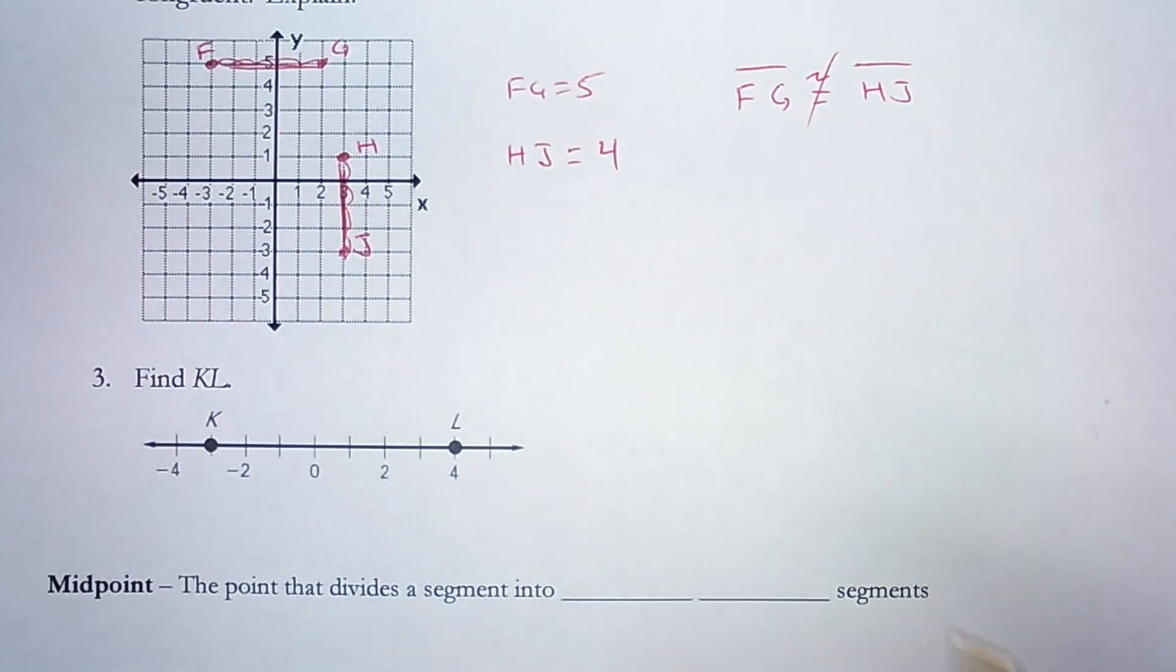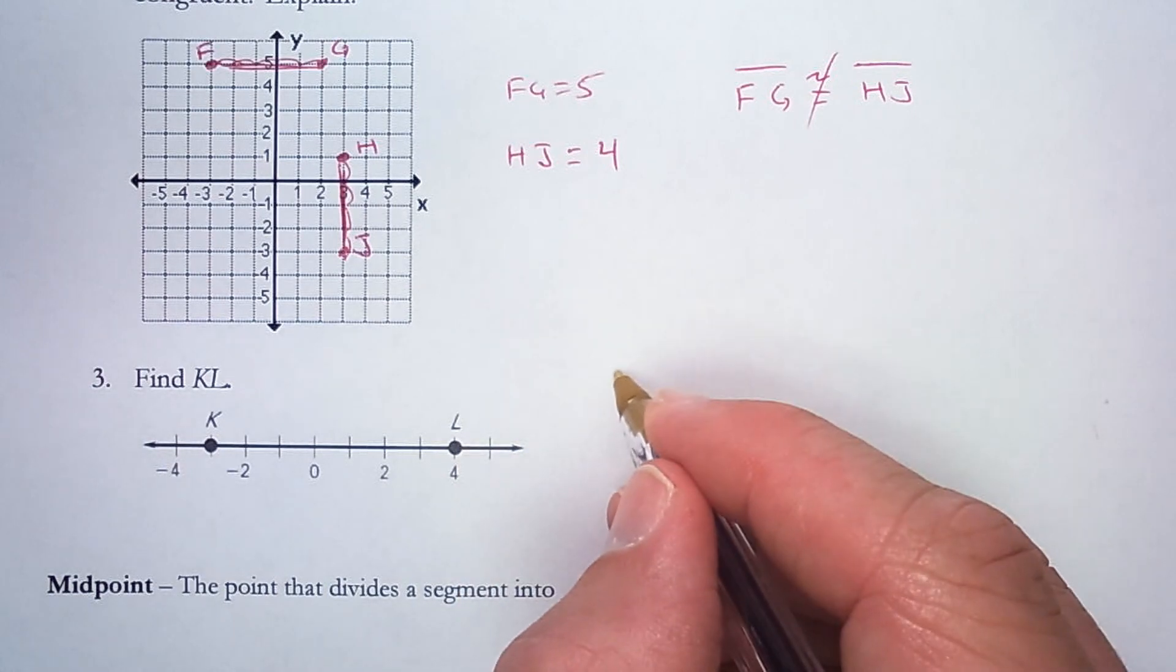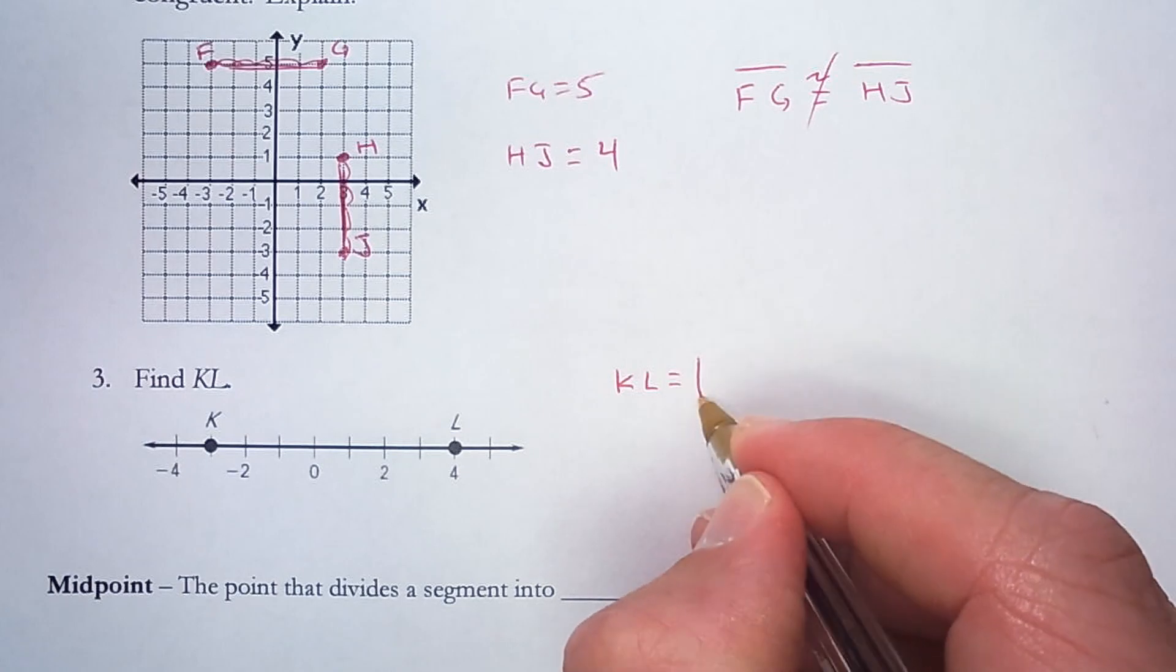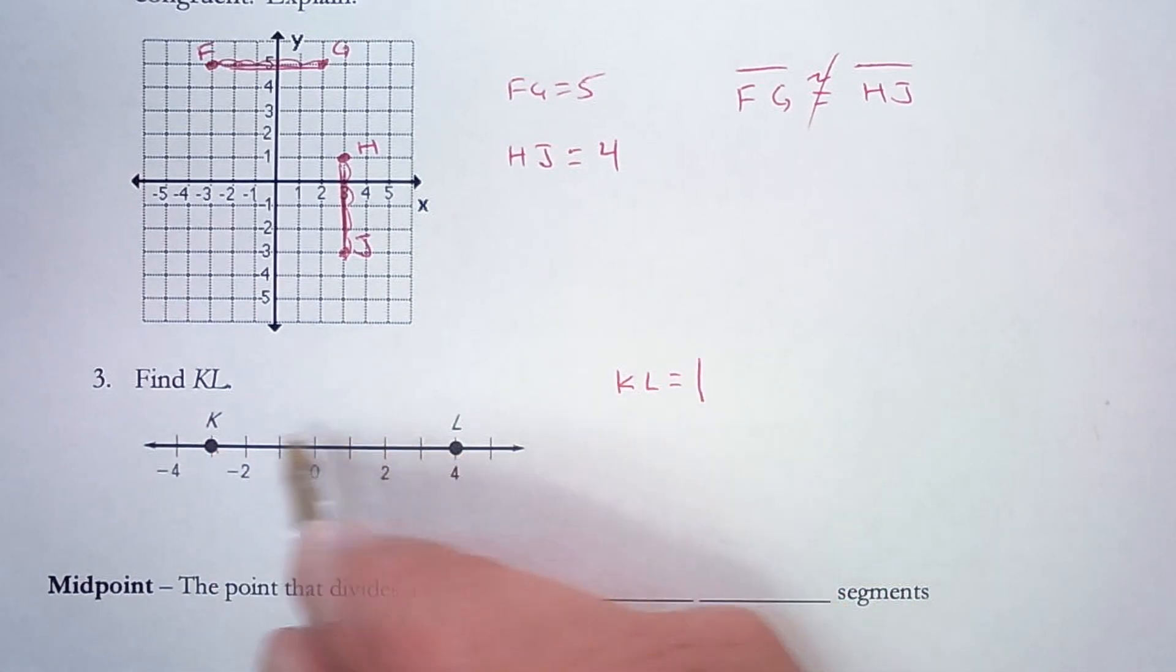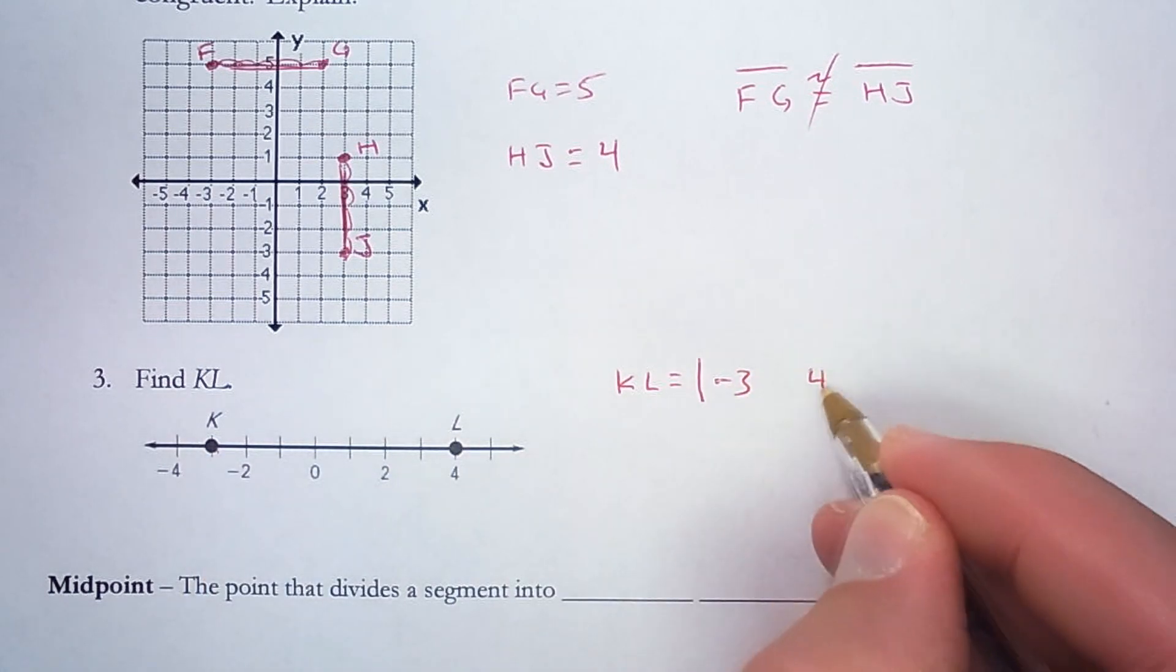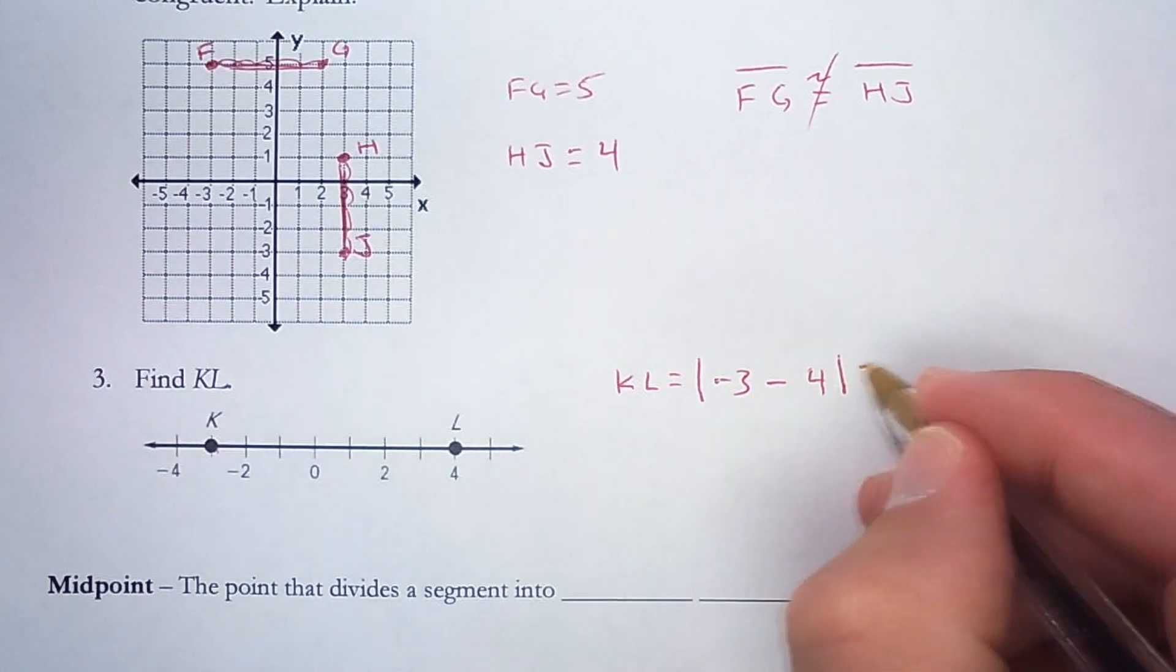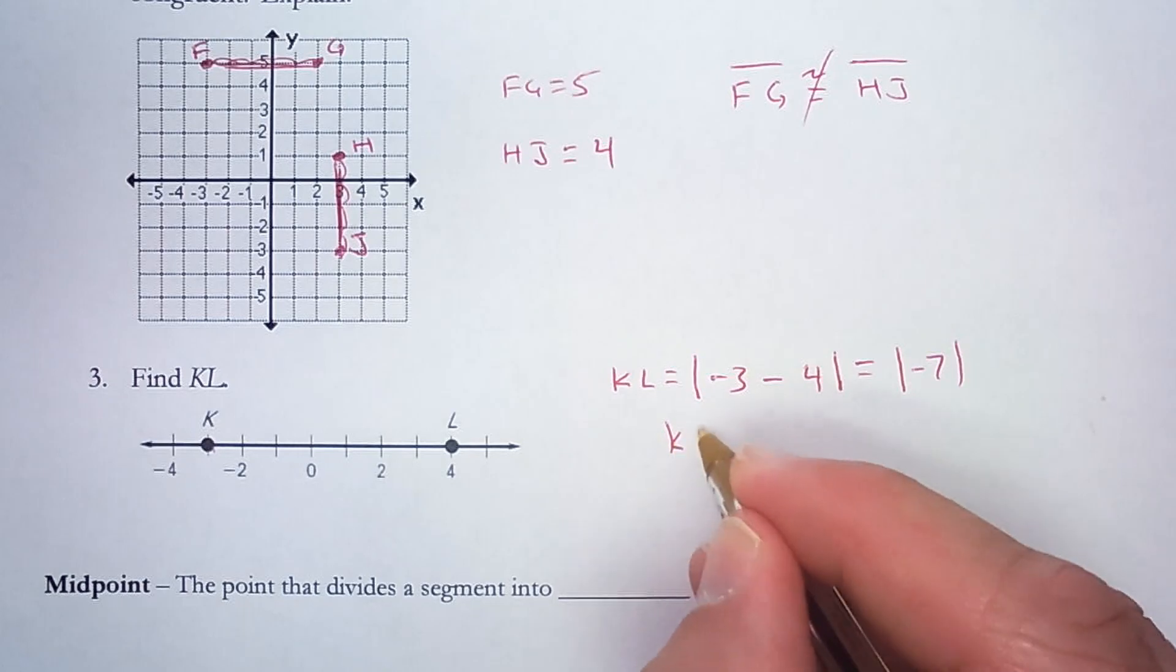Find the length of segment KL. There's two different ways we could do this. First, let's use the ruler postulate. That says the length of KL is equal to the absolute value of the difference of the two coordinates. The two coordinates are negative three and positive four, and the difference means subtract them. That is the absolute value of negative seven. So KL has a length of seven.